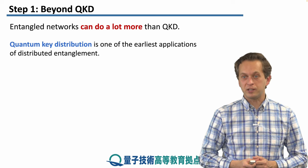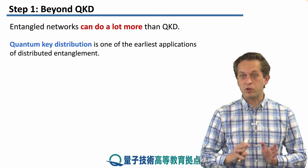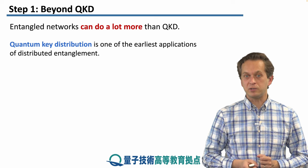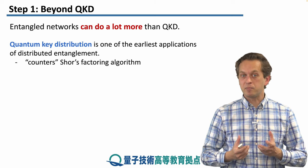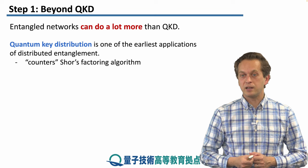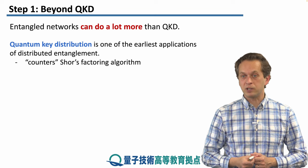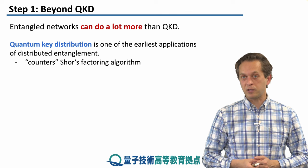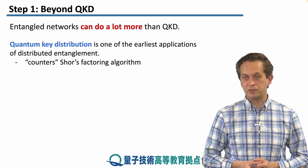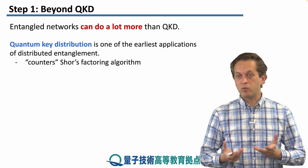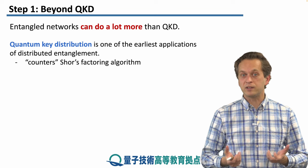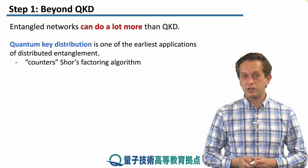So let's talk about quantum key distribution first before we go beyond it. Quantum key distribution is one of the earliest applications of distributed entanglement. It is a natural counter to Shor's factoring algorithm — one of the earliest exciting developments in quantum technologies was the invention of Shor's factoring algorithm, which in principle can break classical RSA encryption. On the other hand, what quantum technology takes away it also provides in new ways, in the form of entanglement and quantum key distribution using entanglement.